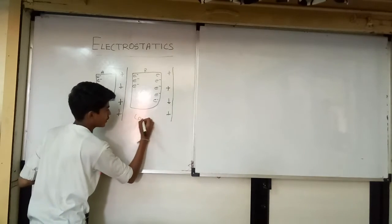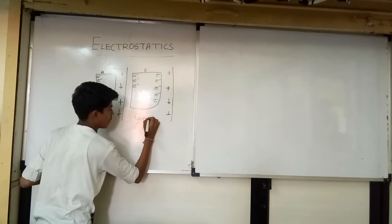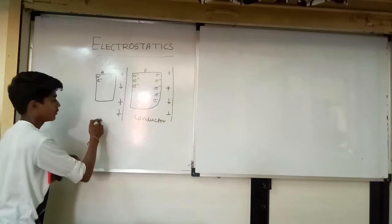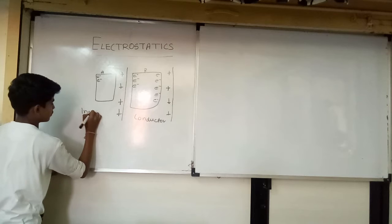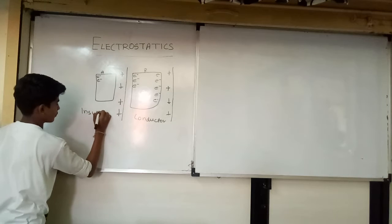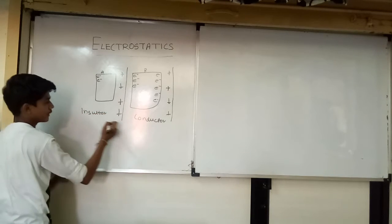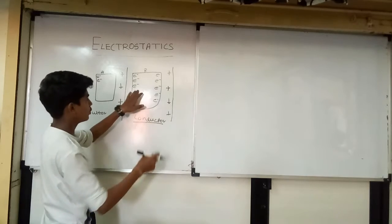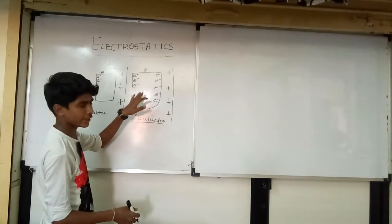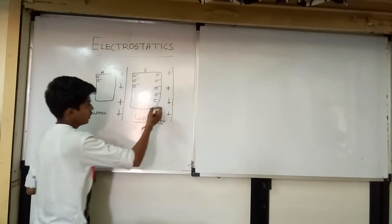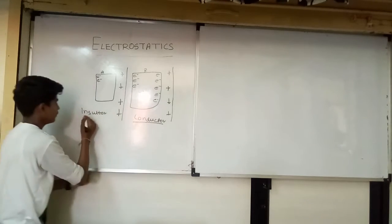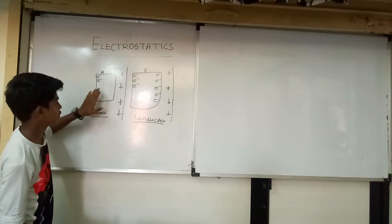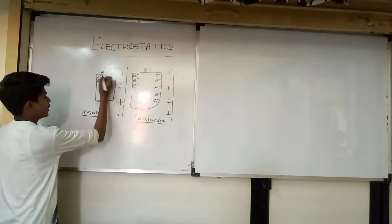This will become a conductor and this one is the insulator. We can define a conductor as a material that allows the flow of electrons inside it, but insulators are those materials which do not allow the flow of current through them.